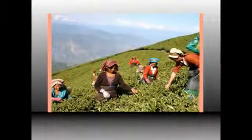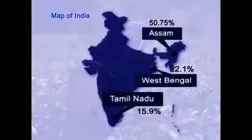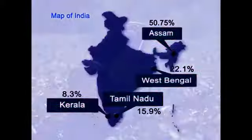Dear students, today we will discuss about the diseases of tea and its management. India is the largest producer and consumer of tea, that is Camellia sinensis, in the world. It is grown mainly in three major regions in India: the Nilgiris region in southern India, and Assam and Darjeeling in northeast. The largest producers of tea are Assam contributing 50.75%, West Bengal 22.1%, Tamil Nadu 15.9%, and Kerala 8.3%.